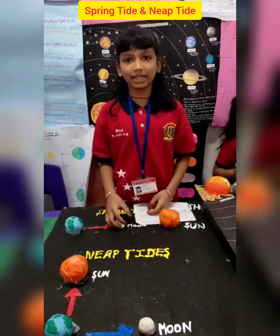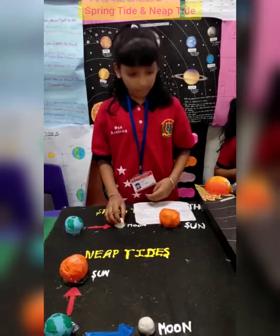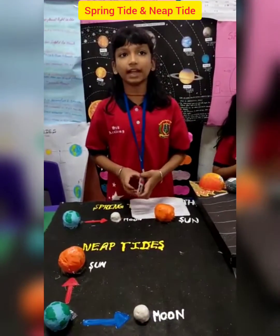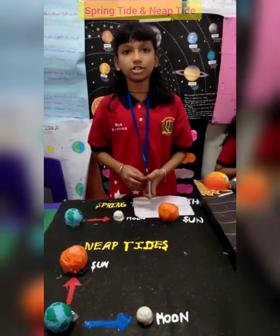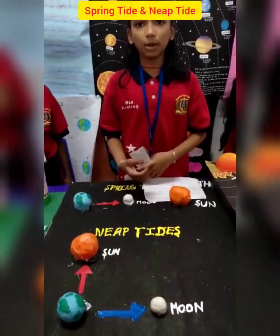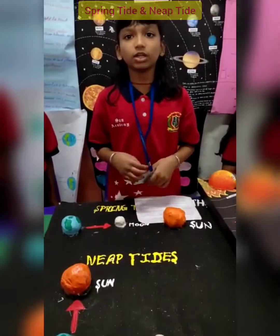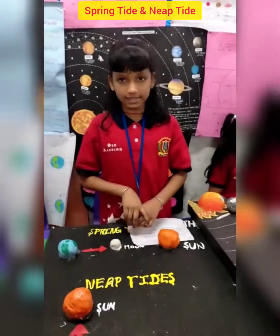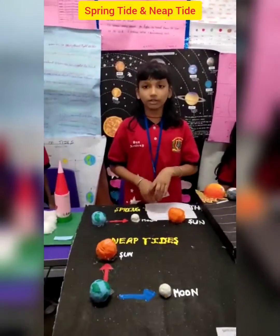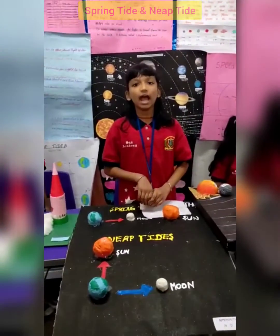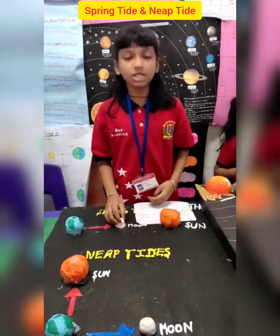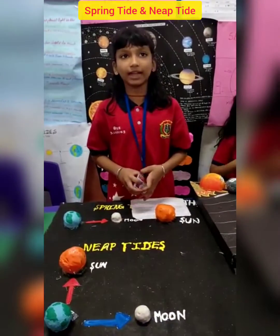It is the tide of greater than average range around the times of new moon and full moon. When the sun and the moon are at right angles to each other, there is the least gravitational pull, meaning the tidal range is at its lowest.